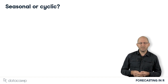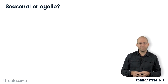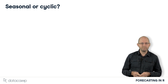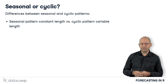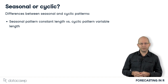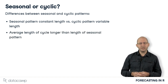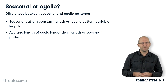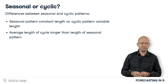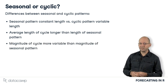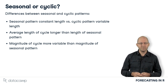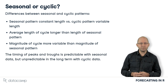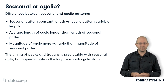We need to distinguish between seasonal and cyclic patterns, as very different time series models are used in each case. To summarise: seasonal patterns have constant length, while cyclic patterns have variable length. If both exist together, the average length of the cyclic pattern is longer than the length of the seasonal pattern. The size of the cycles tends to be more variable than the size of the seasonal fluctuations. As a result, it's much harder to predict cyclic data than seasonal data.